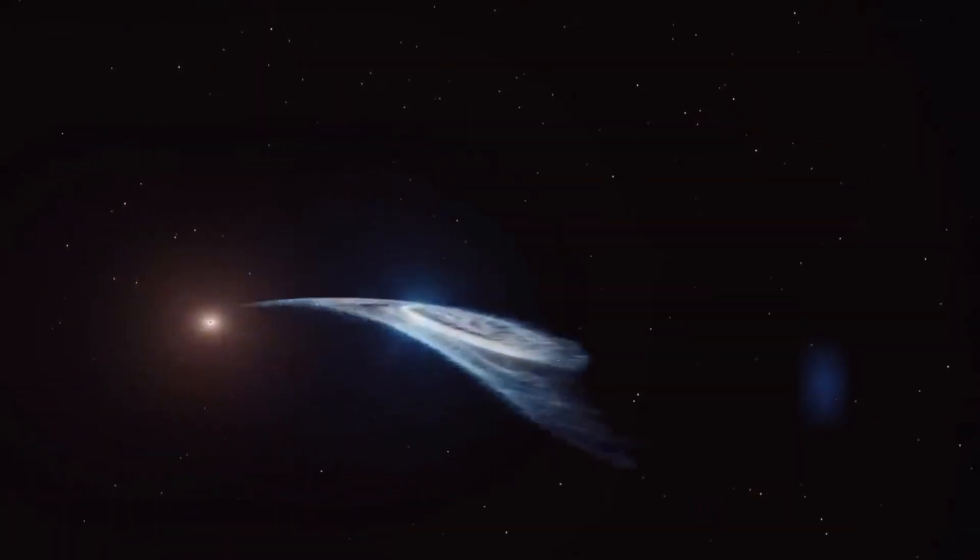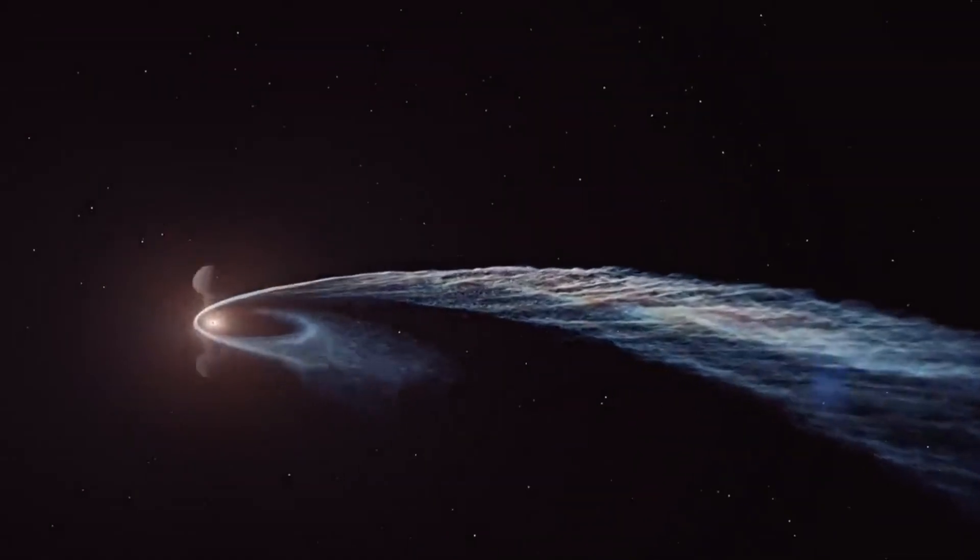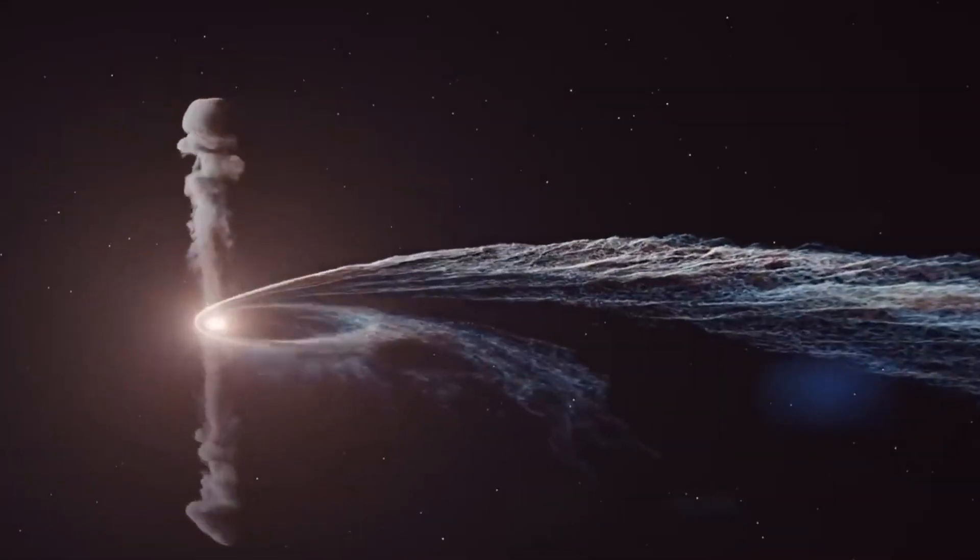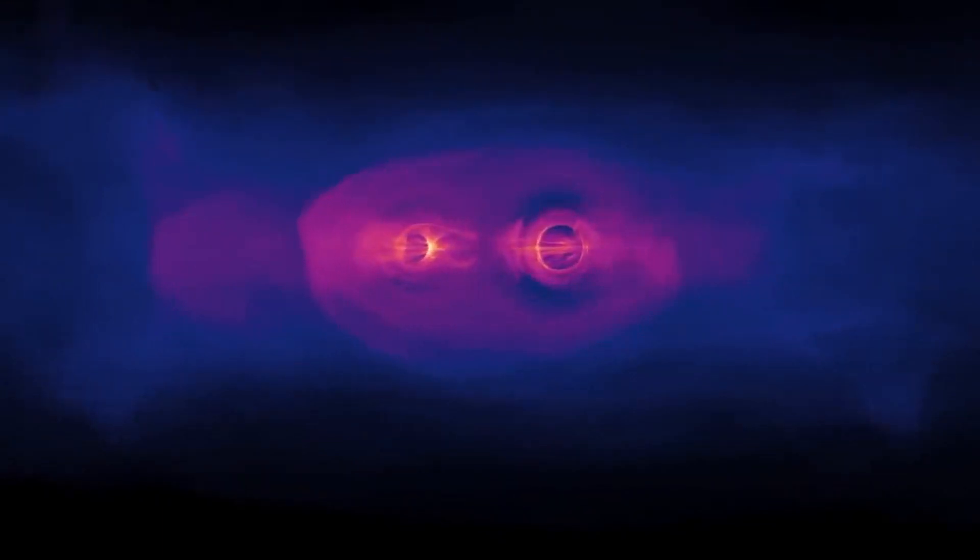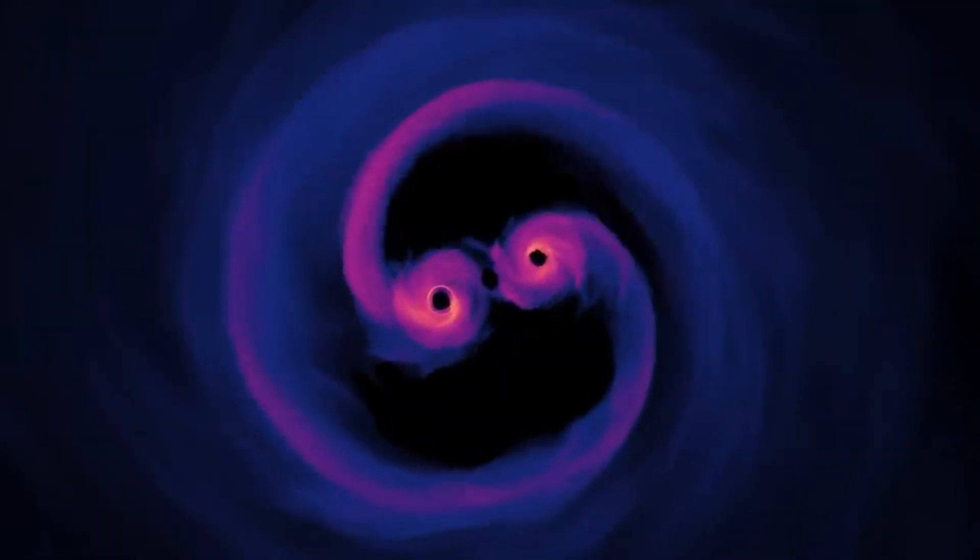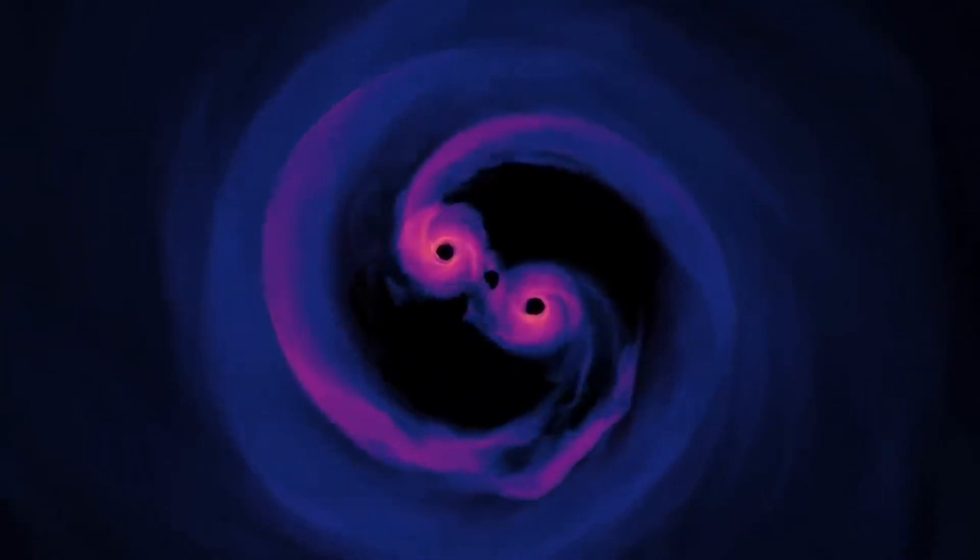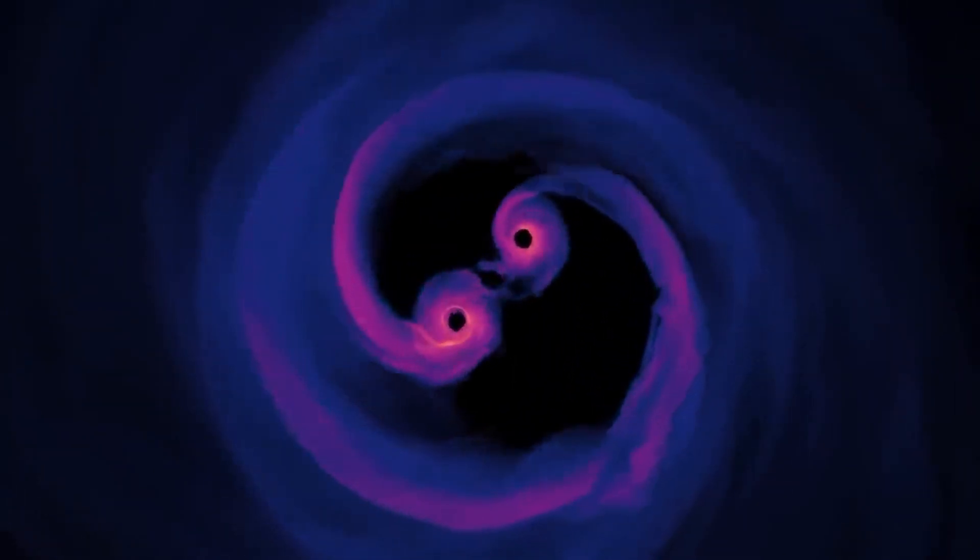These seeds then grow larger by consuming wandering stars and engaging in cosmic mergers with smaller black holes. Alternatively, they could be a collection of coalescing intermediate-sized black holes that gather at the centers of galaxies before undergoing several massive accretion events to become a supermassive black hole.